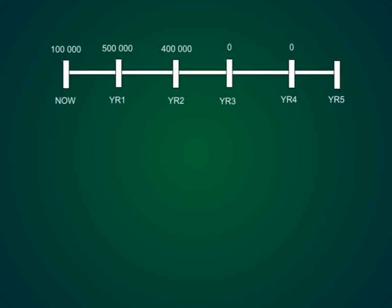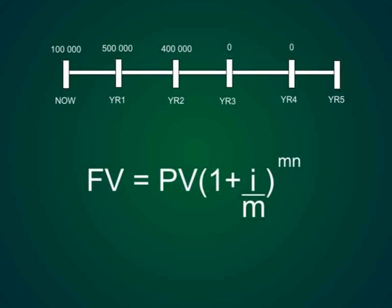The first technique I'm going to use is I'm going to take each separate amount and we're going to work out its future value at the end of 5 years and then add all of those three values together. The formula we're going to use is future value equals present value open bracket 1 plus interest over M number of compounds per year close bracket to the power NM which is number of years times by the amount of compounds.